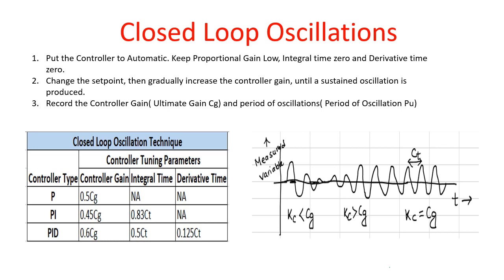For the closed loop oscillation method, first you need to put the controller in automatic mode, keep the proportional gain low, and set integral time and derivative time to zero. Then change the set point and gradually increase the controller gain until a sustained oscillation is produced. Record the controller gain and the period of oscillation.